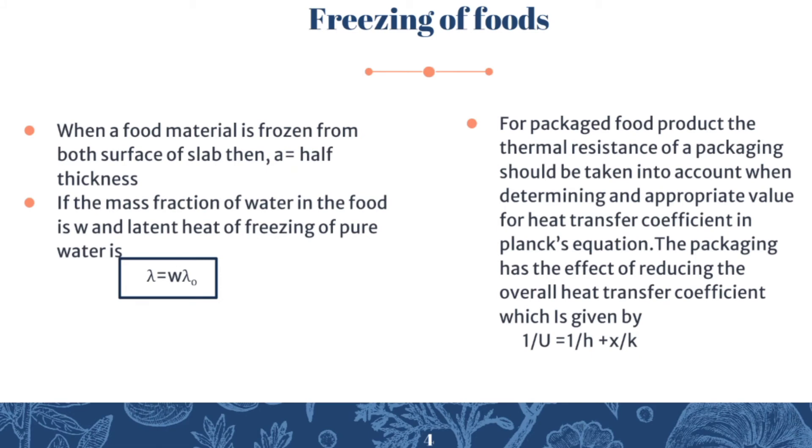When a food material is frozen from both surfaces of a slab, then the thickness used in the formula is divided by 2 - that is, half of the thickness. If the mass fraction of water in the food is W and latent heat of freezing of pure water is lambda naught, then lambda can be calculated by λ = W × λ₀.